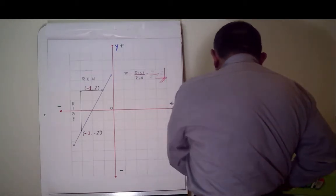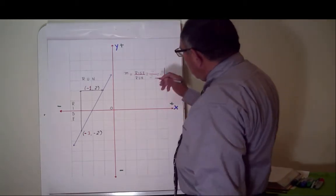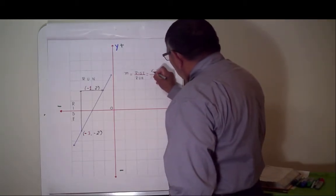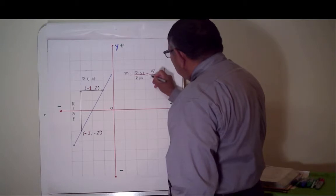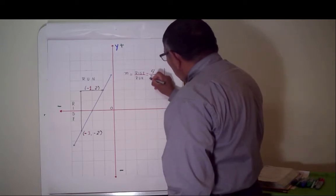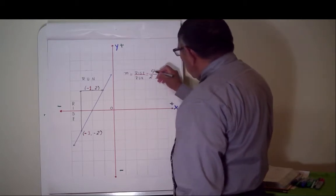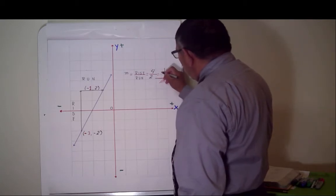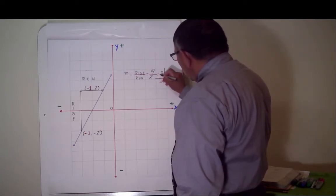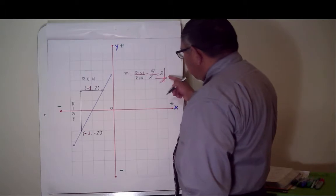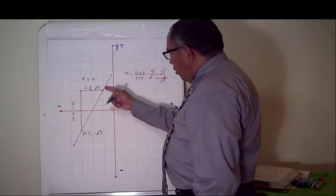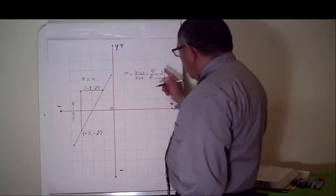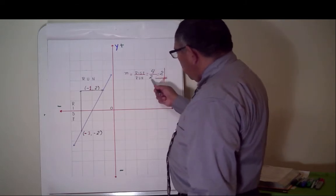Okay. Now, we have to use the formula. Four divided by two. Four divided by two is two. This is the slope of this line. Two.